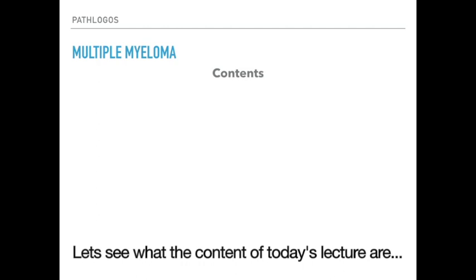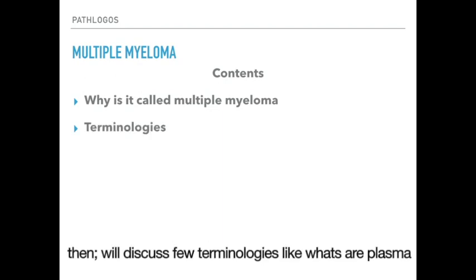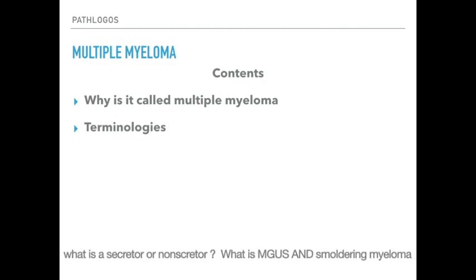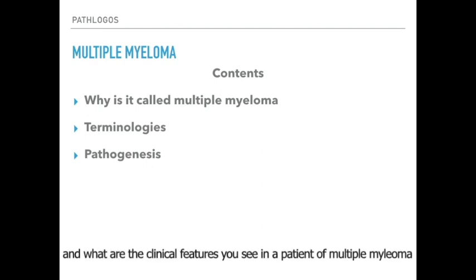Let's see what the content of today's lecture are. We'll start from the origin of the term Multiple Myeloma, then discuss few terminologies like what are plasma cells, what is a secretor or non-secretor, what is MGUS and smoldering myelomas. After we understand those, we'll move on to the pathogenesis and clinical features you see in a patient of multiple myeloma.